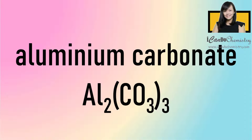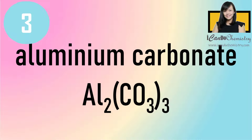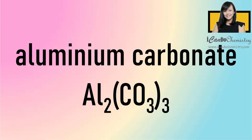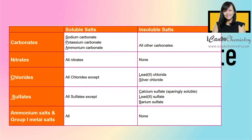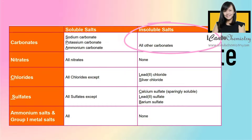7. Aluminium carbonate. Aluminium carbonate is insoluble. All carbonates are insoluble except group 1 or ammonium carbonates. Aluminium is not in group 1 and it is not ammonium, hence it must be insoluble.